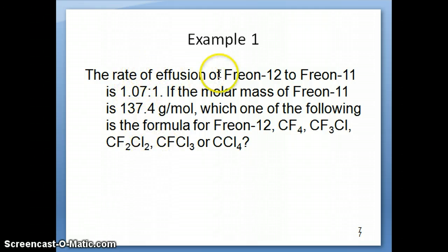It says here that you have rate of effusion of 2 gases, in this case they're called Freon 12 and Freon 11. The ratio in this case is 1.07 to 1, that's the rate of 12 to 11. It tells you that if the molar mass of Freon 11 happens to be this number, which of the following formula can be for Freon 12? So in order to get that, you first have to get the molar mass of Freon 12 and then try to match it to one of these formulas.